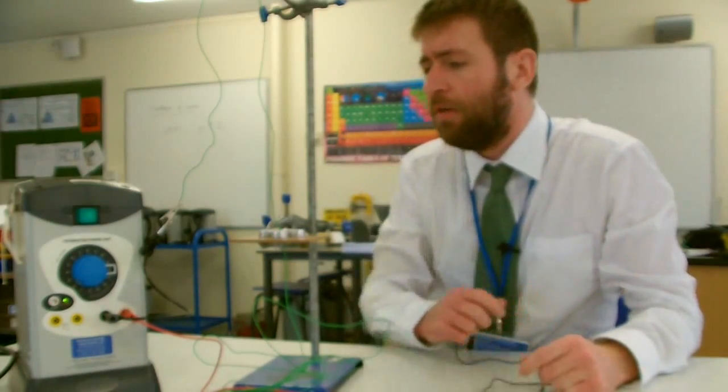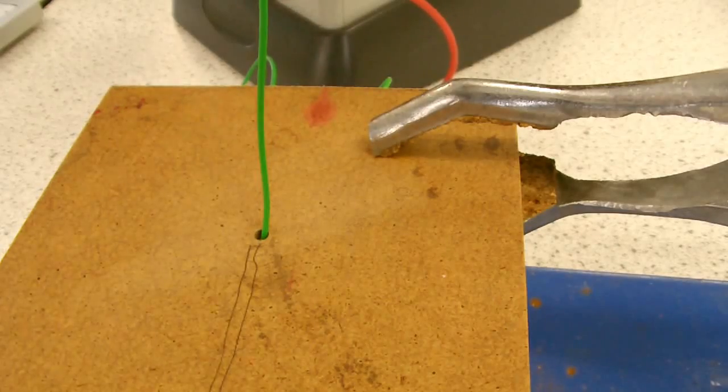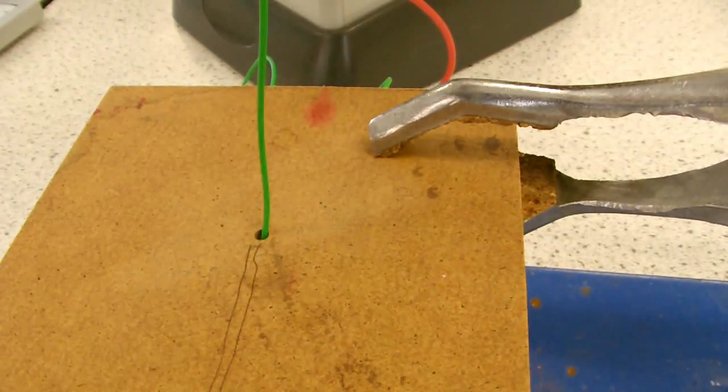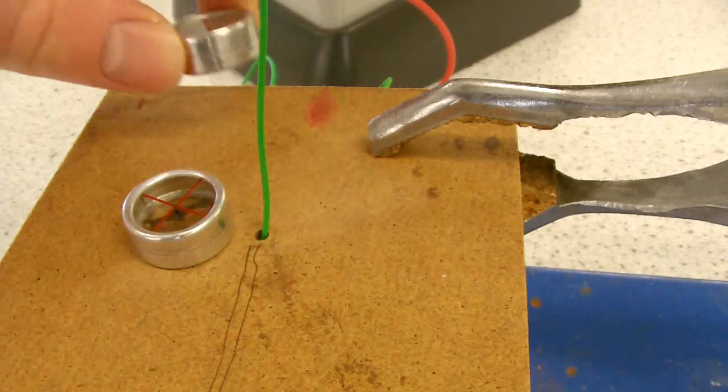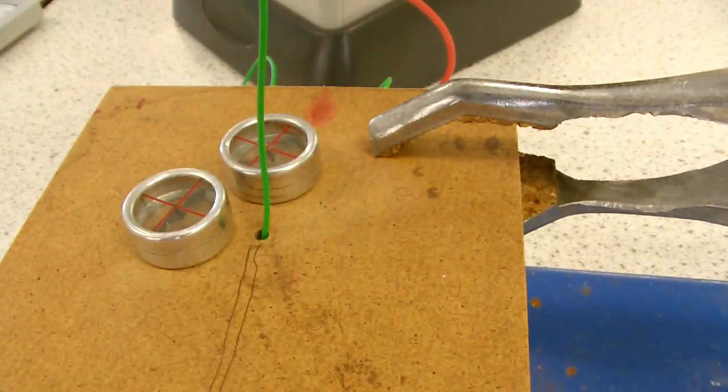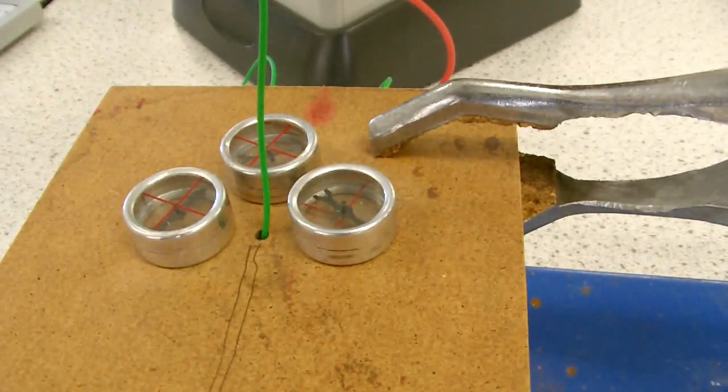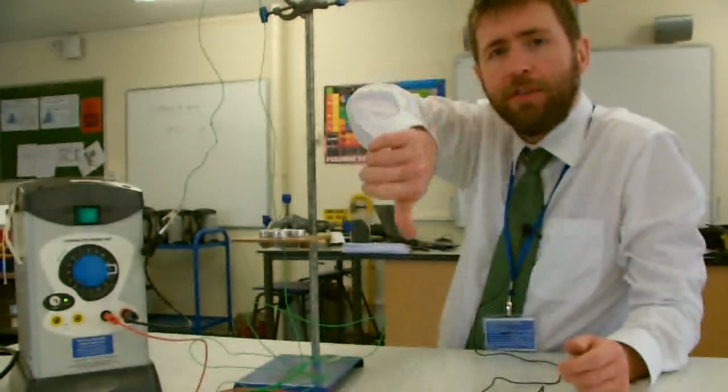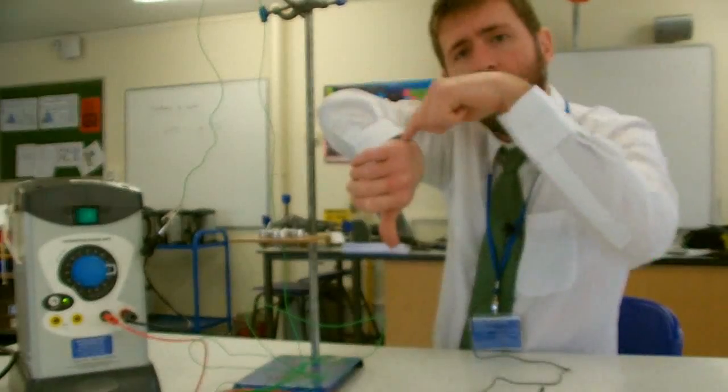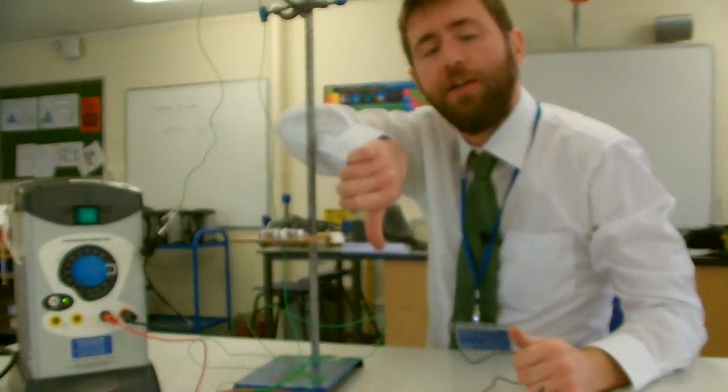What if I actually change that direction of the current? I'll just change on my power supply the direction the current is travelling. Well, now all of the compasses spin round, because now the field is pointing in the opposite direction around the wire. Now my thumb would be pointing downwards, so my fingers are now pointing around the direction in, if I look at it, a clockwise direction.